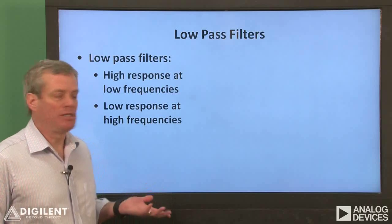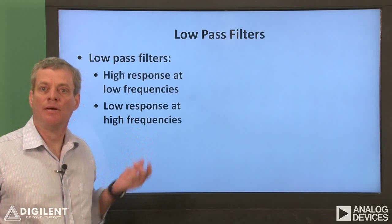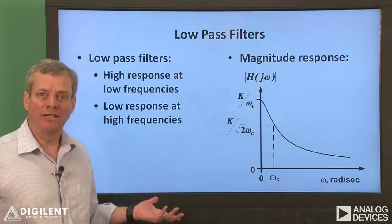Low-pass filters have a relatively high magnitude response at low frequencies and a low magnitude response at high frequencies. This is a plot of a typical first-order low-pass filter's magnitude response.